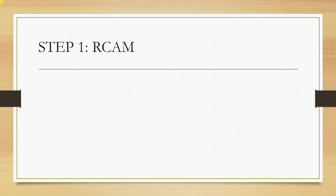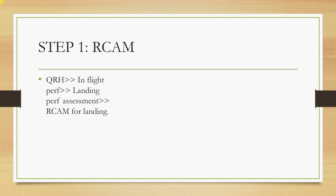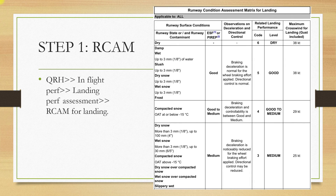The first step is the runway condition assessment matrix (RCAM). Go to in-flight performance, landing performance assessment, and RCAM for landing. You'll end up in a table like this. In our today's example the runway condition is wet, so our RCAM code is 5.